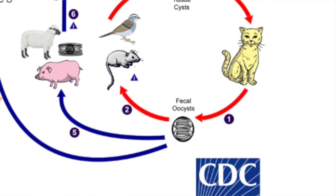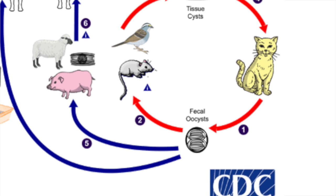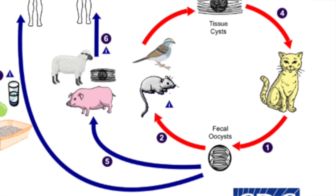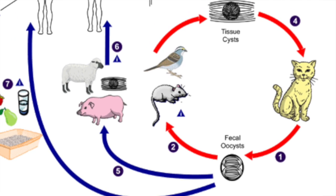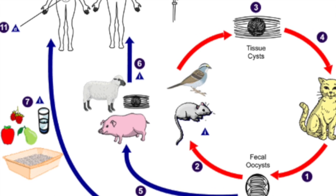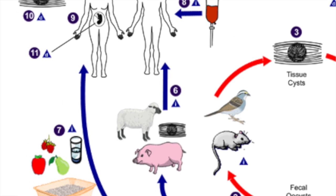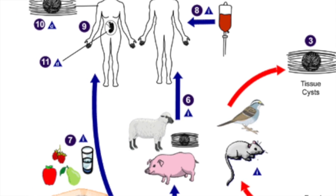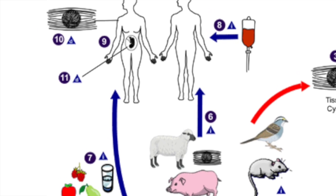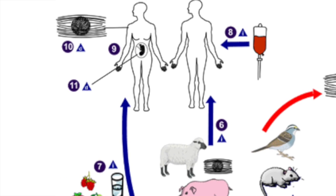Serious problems can arise when humans contract Toxoplasma, which we will cover in a moment. Toxoplasma can be contracted directly from cat feces, but also from soil, fruits and vegetables, as well as water sources contaminated with cat feces. However, meat exposure and consumption appears to be the major transmission route to humans.